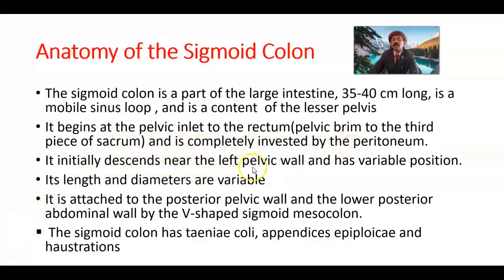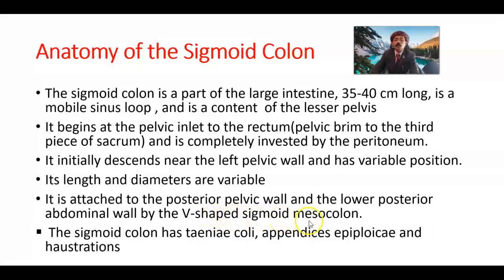It initially descends near the left pelvic wall and has variable position. Its length and diameter are variable. It is mostly a structure of the left side of the true pelvis, but it may extend to the right side. It may extend over the urinary bladder and over the upper part of the body of the uterus in females. It is attached to the posterior pelvic wall and to the lower posterior abdominal wall by the V-shaped sigmoid mesocolon.